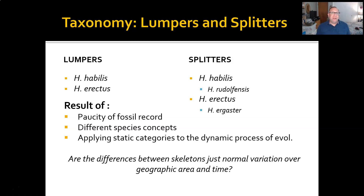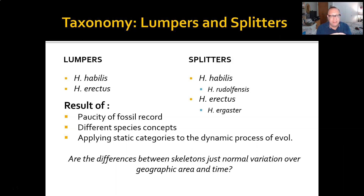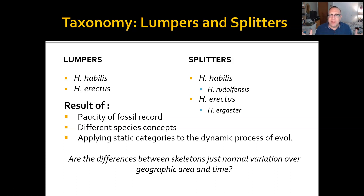That gives us our introduction to genus Homo. In the next few videos, we'll dive deeper into the lumper-splitter positions for each of these species, and then talk in depth about stone tools and some of the behavioral adaptations that both Habilis and Erectus tended to develop. Thank you very much — I hope you have a great week and I will see you soon.